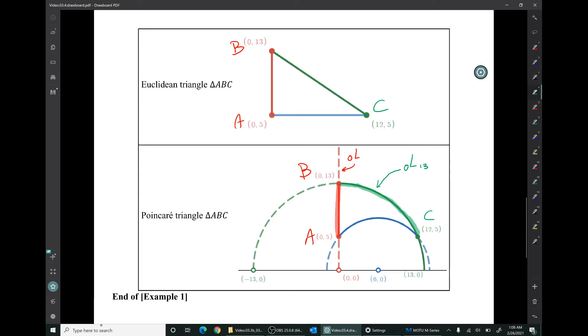Segment BC is this green arc that's part of this green type 2 line that we discussed before, the line with center at (0, 0) and radius 13. Now segment CA is a part of line CA. Now Poincaré line CA has kind of a messy description. It has a center at (6, 0). That's not surprising because points A and C have the same height. They're both five units above the x-axis. So we know that they're going to lie on a semi-circular shape whose center is midway between their x coordinates of 0 and 12. So we should not be surprised that this center is located at x equals 6.